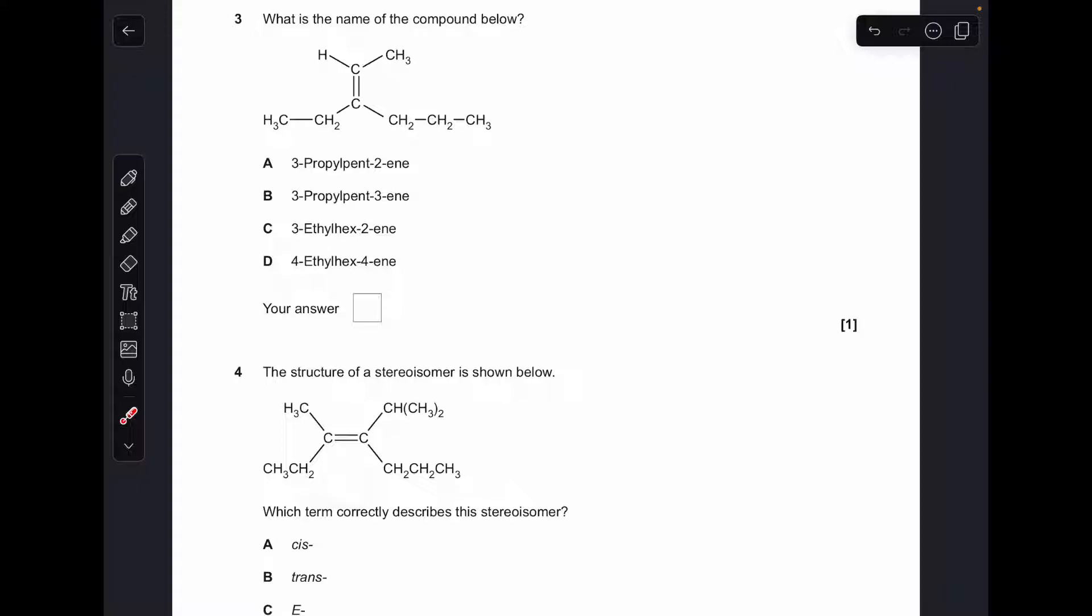Number three, so the longest continuous chain is this one here, so how many carbons long is that? One, two, three, four, five, six, so it's a hex. We're down to C and D. Where's the double bond? It's after carbon two to get the lowest number. It's a hextoene, there's only one of those in the options, so C is the answer.